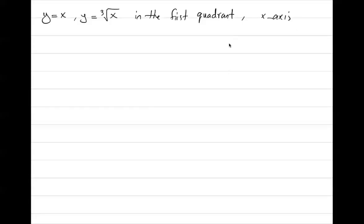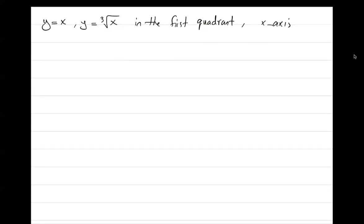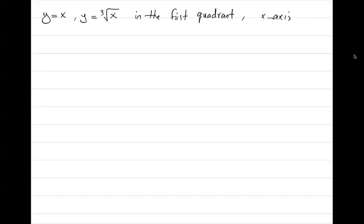In this question we have y equals x and y equals the third root of x, both located in the first quadrant. We want to rotate this region about the x-axis. What is the volume and how do we calculate it?